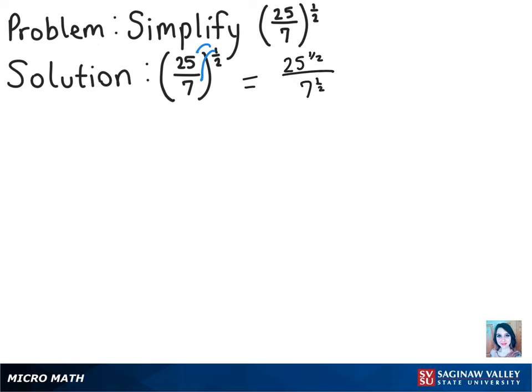Since we know that having a number in the denominator of our exponent means that it is a root, we can rewrite this as the square root of 25 over the square root of 7.